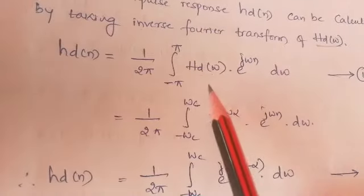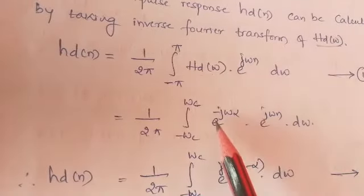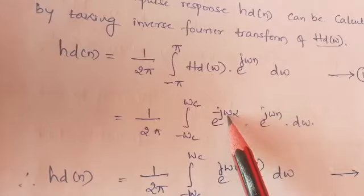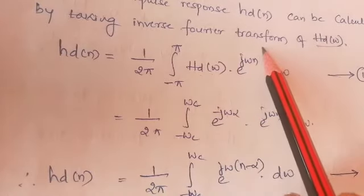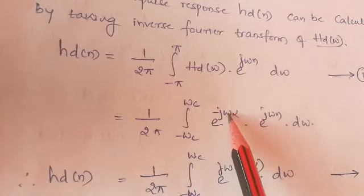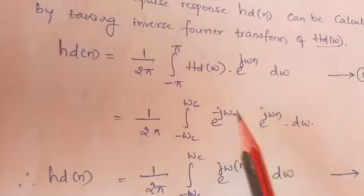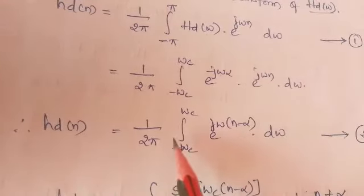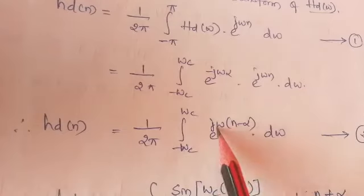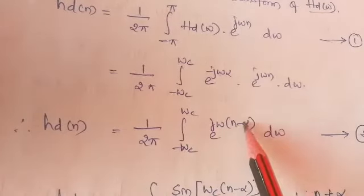Let us substitute given transfer function that is e to the power minus jω times α, where ω indicates frequency component. Always the transfer function and the Fourier transfer function is given in this format only, where ω indicates frequency component. Let us take the common of the power term. Then we are writing integration over the limits minus ωc, frequency range, e to the power jω(n minus α) dω.